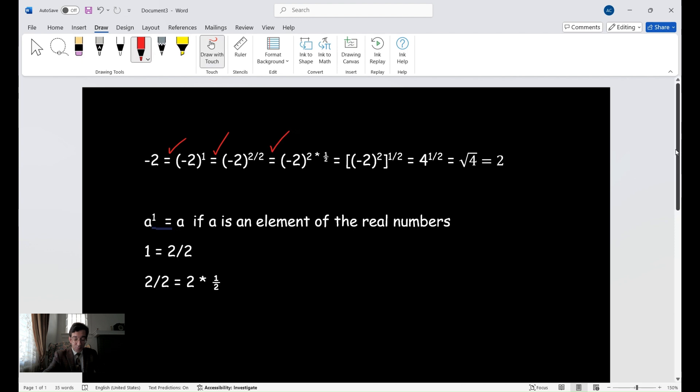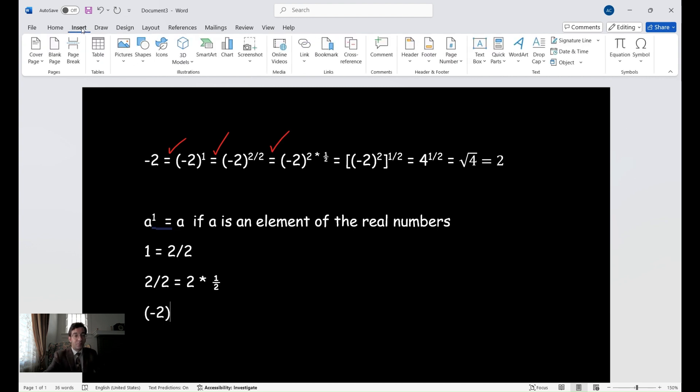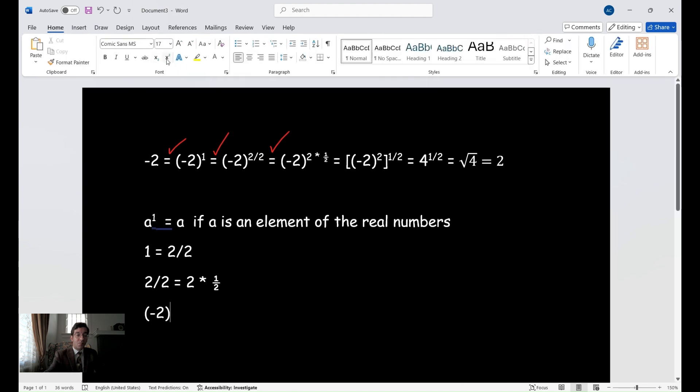And now we're saying negative two, negative two squared is equal to four. Is that valid? Well, yeah. I mean, no matter where you are in the world, negative two times negative two is going to give you a positive four. So, where is the mistake?